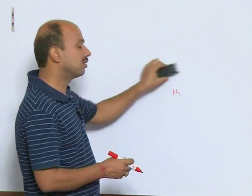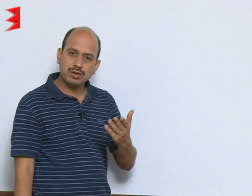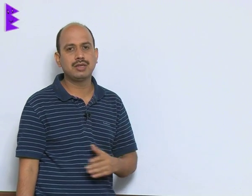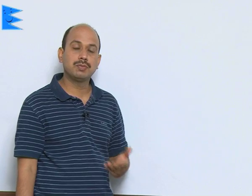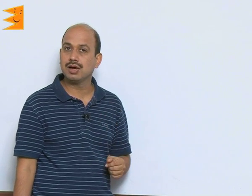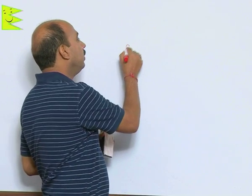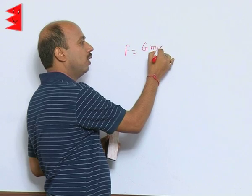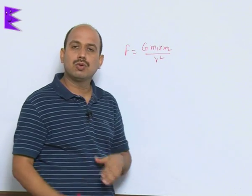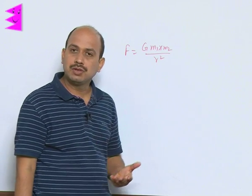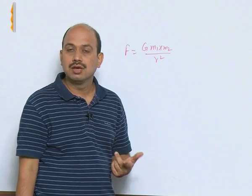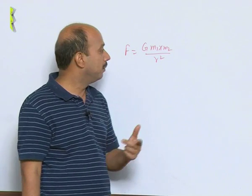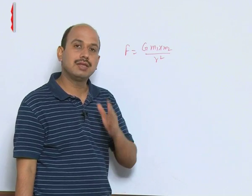Gravitational force acts between any two objects that have mass. For example, if you are sitting in a class with a table nearby, there is a gravitational force between you and the table. But you cannot observe it because the formula is F = G·m₁·m₂/r². When you calculate this force using your mass, the table's mass, and the distance between you, the value is very small — that is why you cannot see its effect, but the gravitational force does exist.